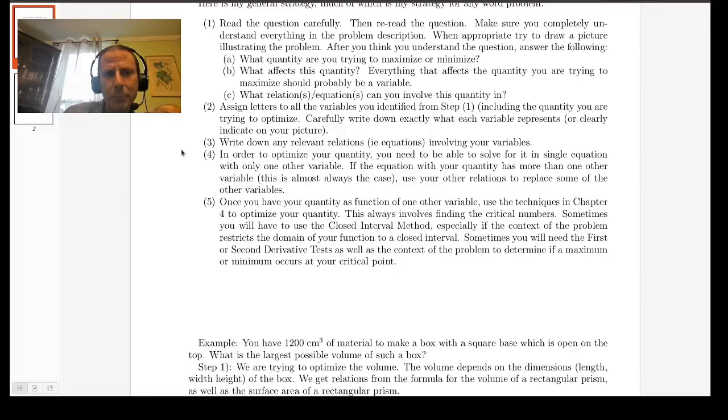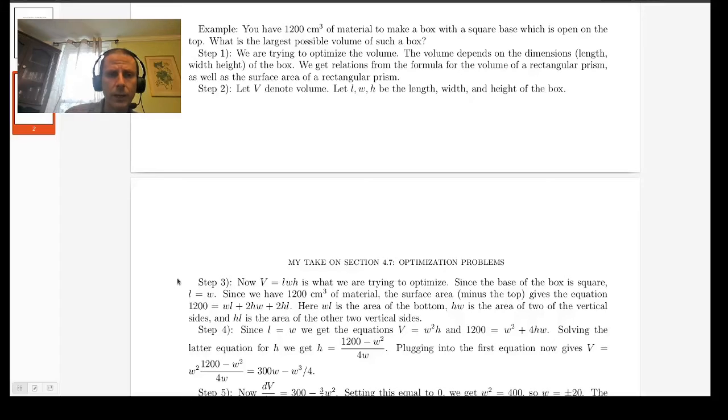Now the third step that I'm outlining here is to write down any relevant relations. And when I say relation I almost always mean an equation that's going to involve your variables. So we basically need equations with your variables so that we can start to try and do calculus on it. For our example it's not that hard to get the relations we know that the volume of a box is going to be the length times the width times the height so V equals LWH will be a relation.